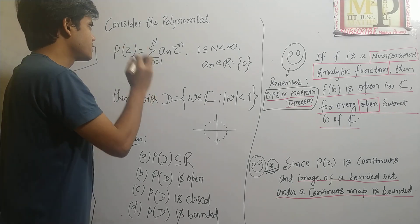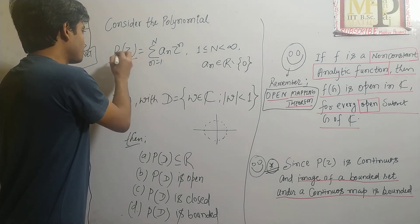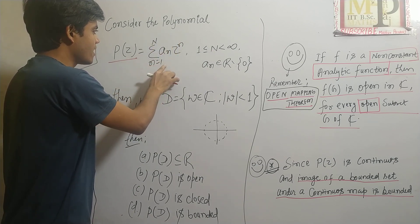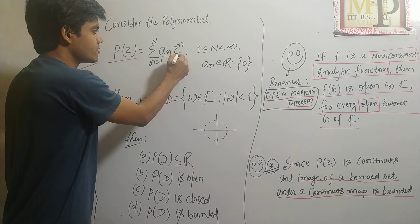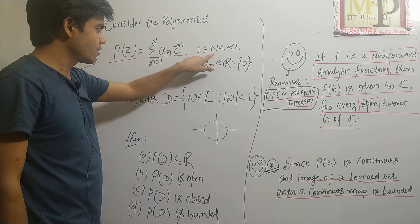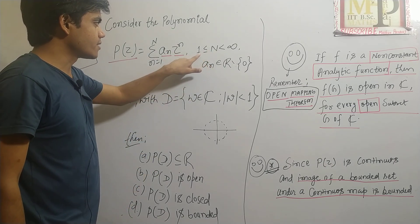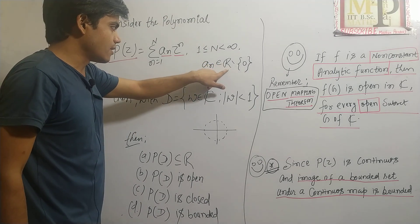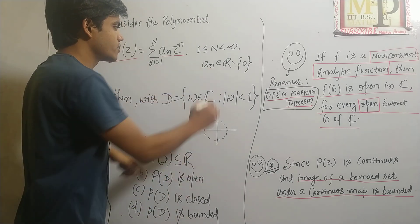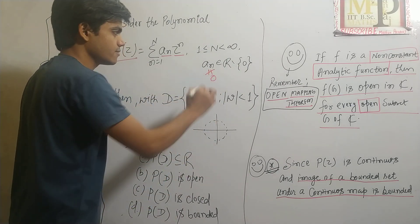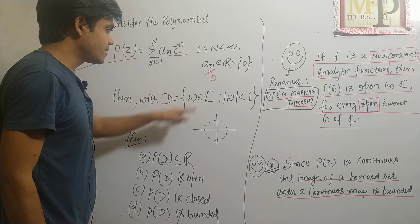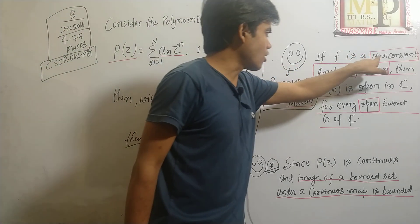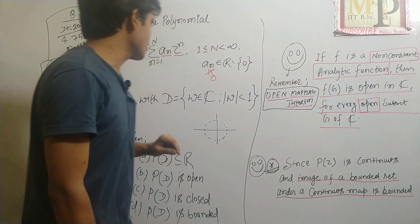First of all, consider P(z) which is given as a series summation n from 1 to n, a_n z to the power n where n is finite but greater than or equal to 1, and your a_n is real but a_n is not equal to 0. This makes sense because you need a function which is non-constant analytic function.